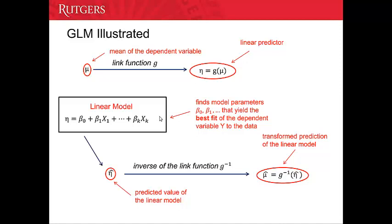Now let's look at the third step. Here we try to get the mean of the dependent variable by using the inverse of the link function applied to the linear predictor, which gives us the mean of the dependent variable.